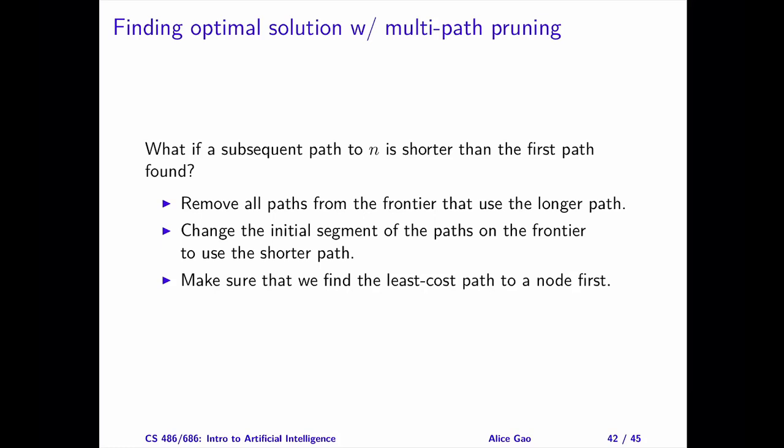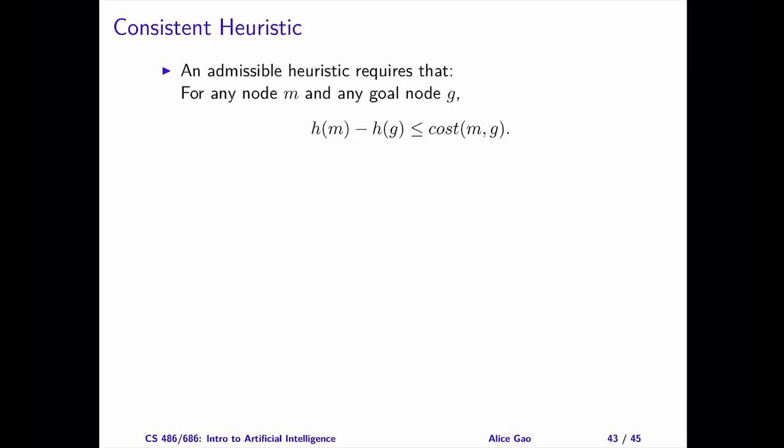For the third strategy, we want to ensure that the algorithm finds the shortest path to a node before finding any longer path. This is possible since we have control over the heuristic function. If we choose the heuristic function intelligently, then A-star search with multipath pruning can be optimal. Recall that if we don't perform multipath pruning, the optimality of A-star search requires the heuristic function to be admissible. We can define an admissible heuristic by using this inequality: consider any node M and any goal node G.